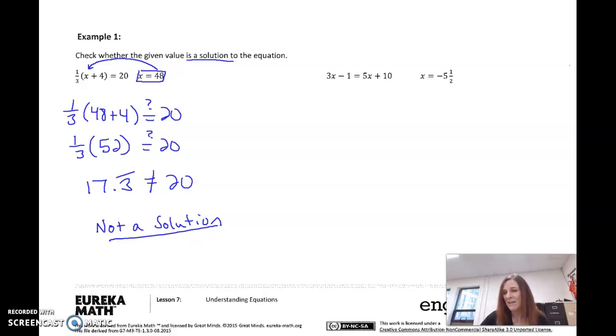Let's try this next one. Now, we have x equals negative 5.5, and just for easiness, I'm going to change it to negative 5.5, because one half is the same thing as 0.5. Now, what I'm going to do is I'm going to take this 0.5, and I'm going to substitute it in for x. I'm wondering, is negative 5.5 the missing value? So three times, I'm going to use parentheses, you can use that or a dot, negative 5.5 minus 1. Does that equal, so see I'm copying this right down here, 5 times negative 5.5 plus 10? Alright, now we just follow order of operations.